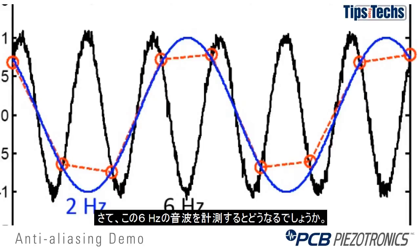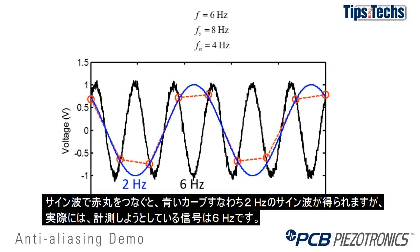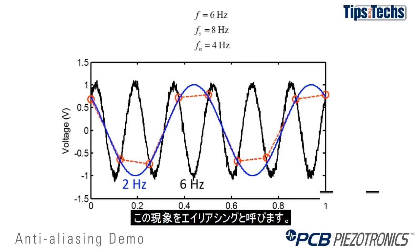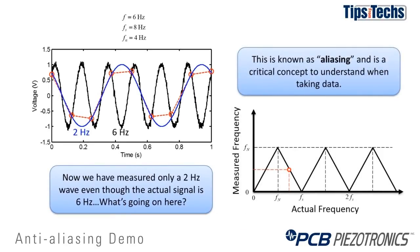So what happens when we sample this 6 Hz wave? If we connect the red circles using a sine wave, we end up with the blue curve, which is a 2 Hz sine wave. In reality the signal we want to measure is 6 Hz, and this phenomenon is called aliasing.